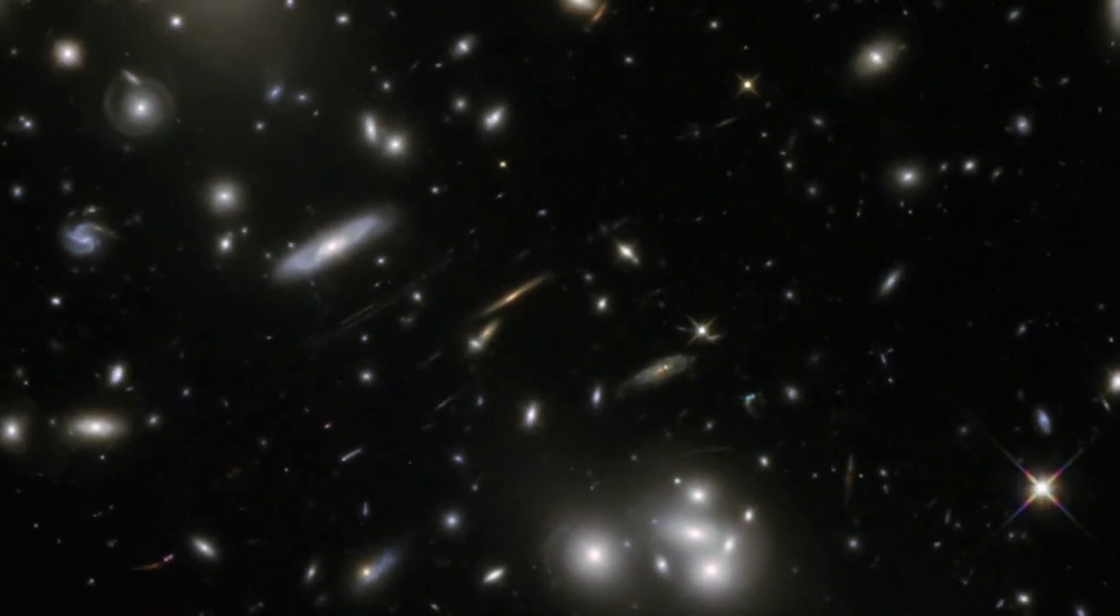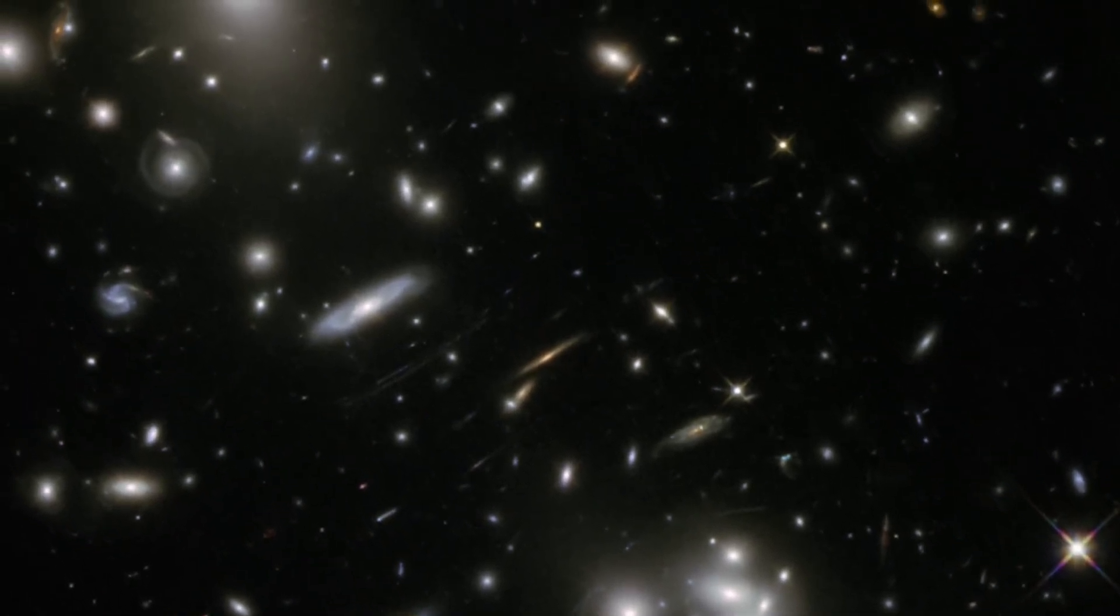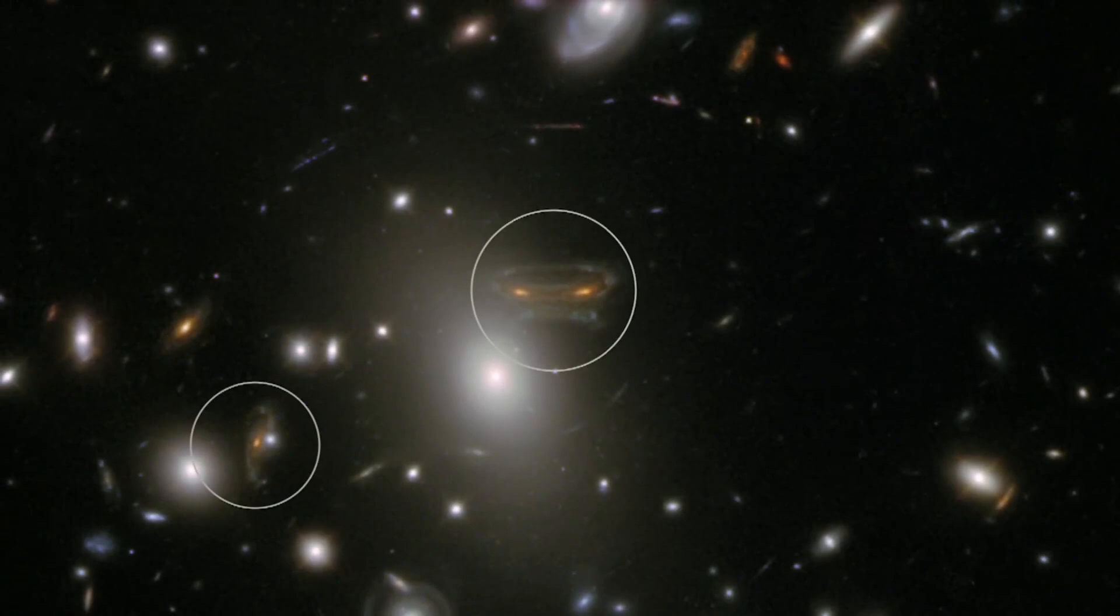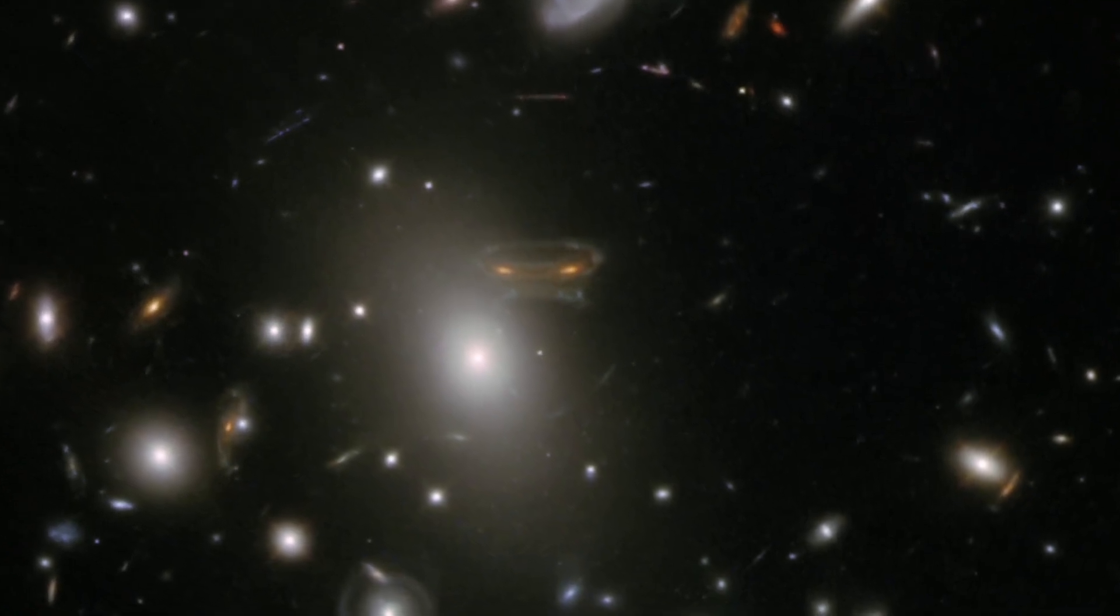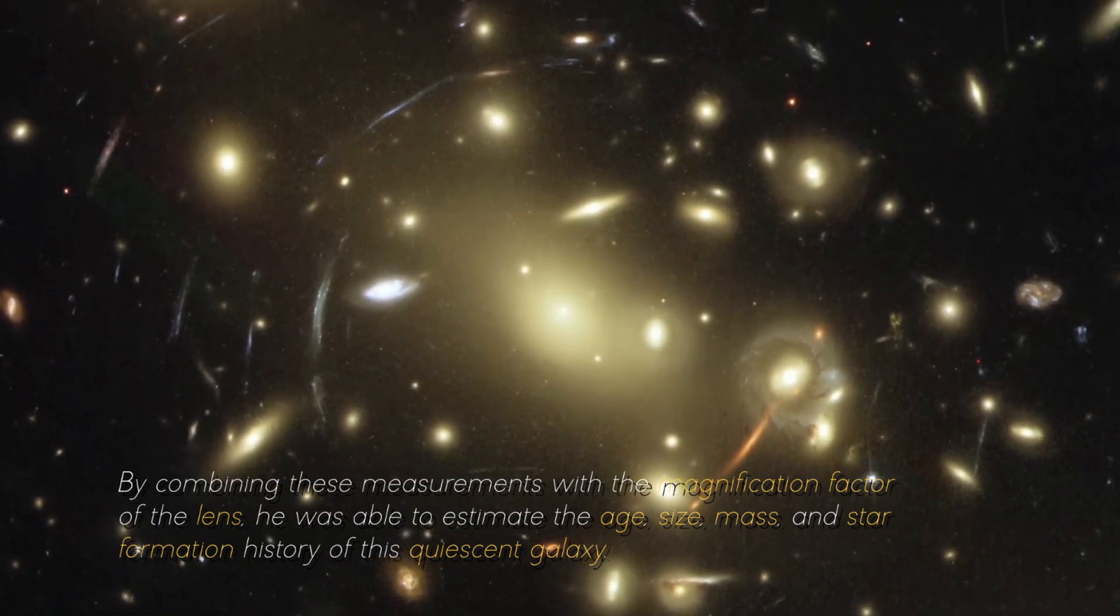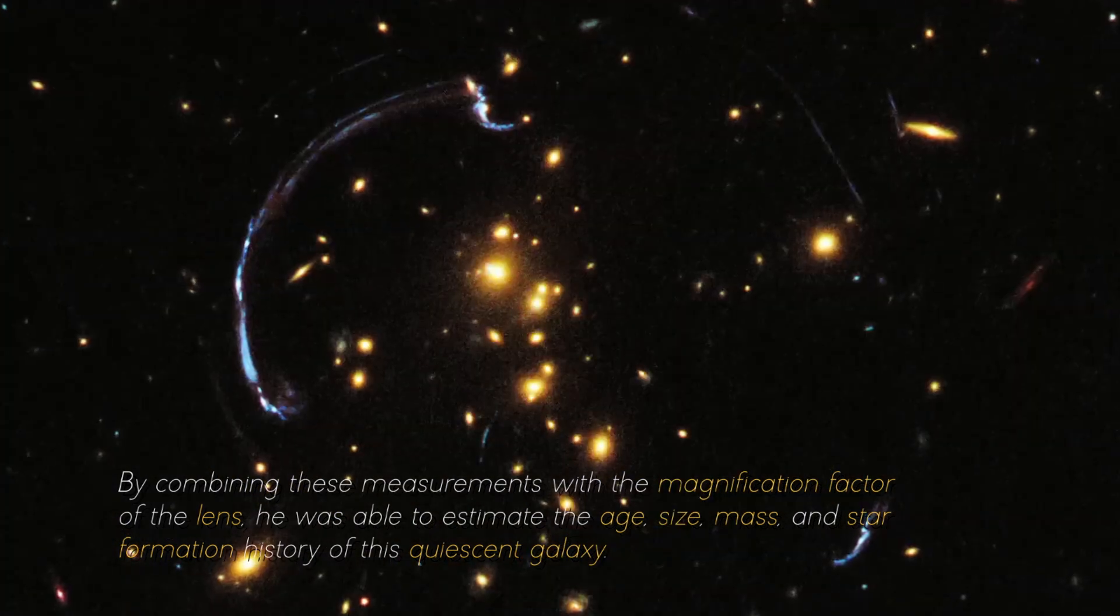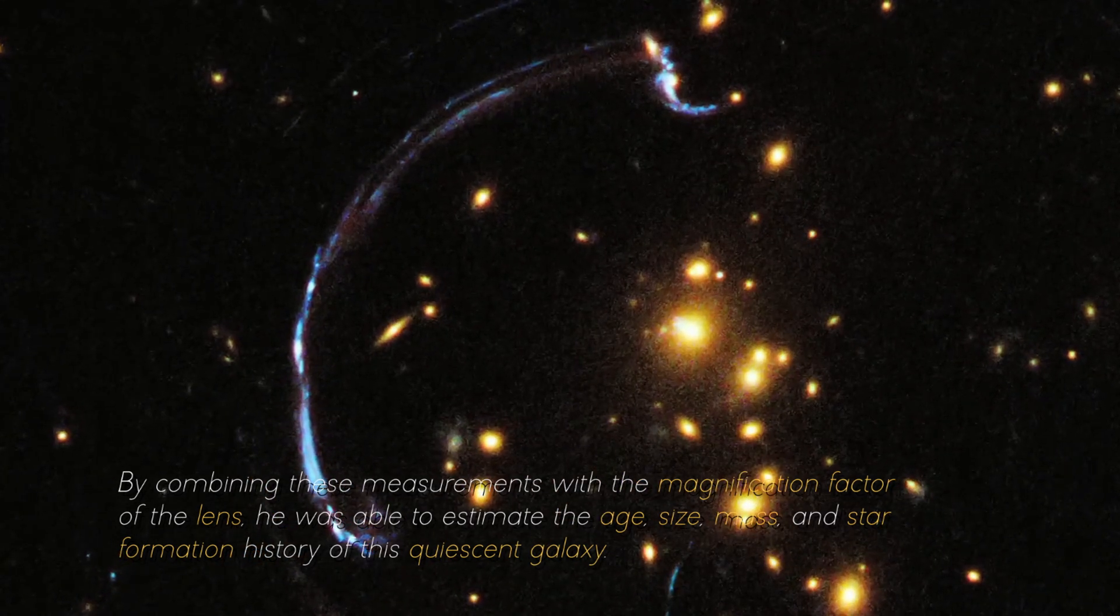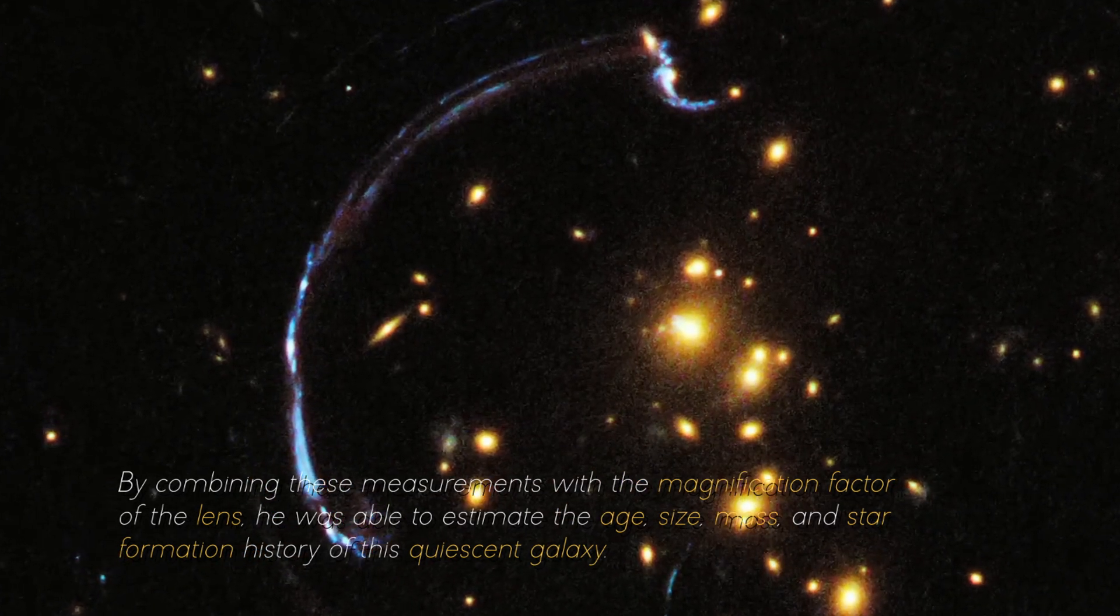Using the NIRCam instrument, James Webb was able to resolve the Einstein ring into multiple images of the quiescent galaxy and measure its brightness and color in several wavelength bands. By combining these measurements with the magnification factor of the lens, he was able to estimate the age, size, mass, and star formation history of this quiescent galaxy.